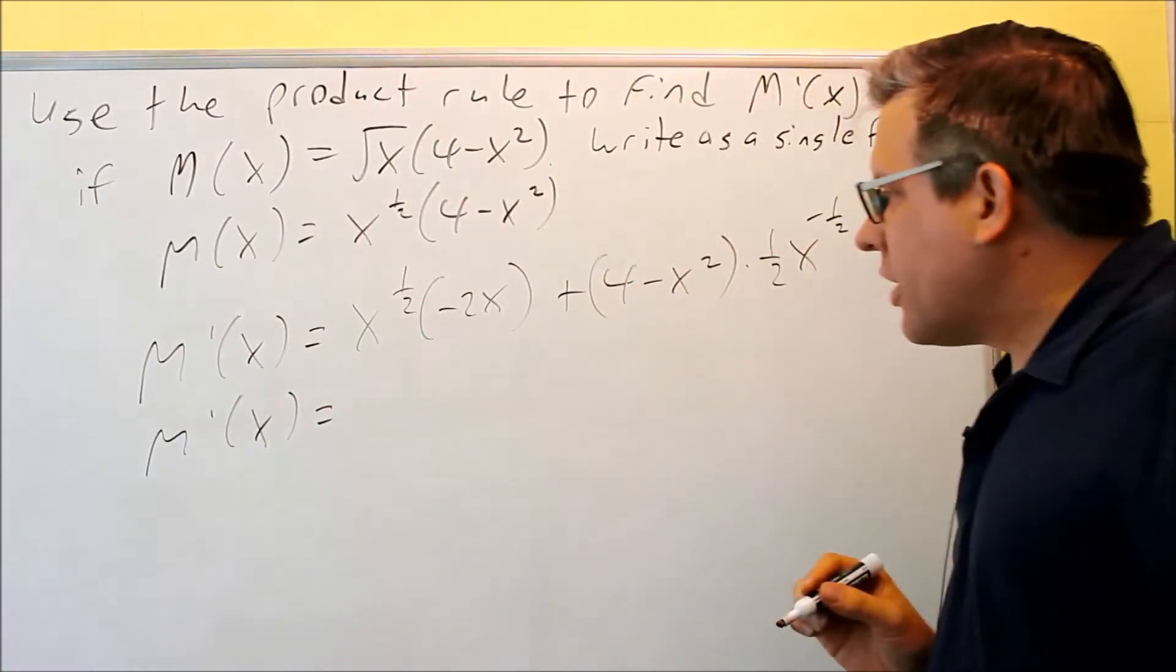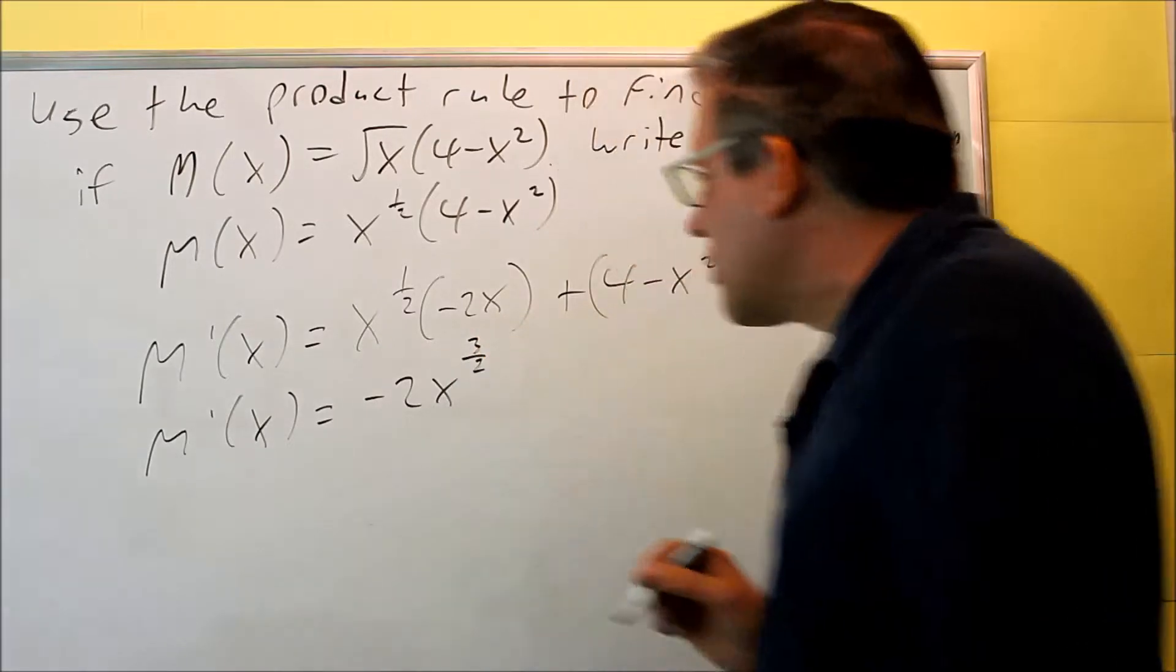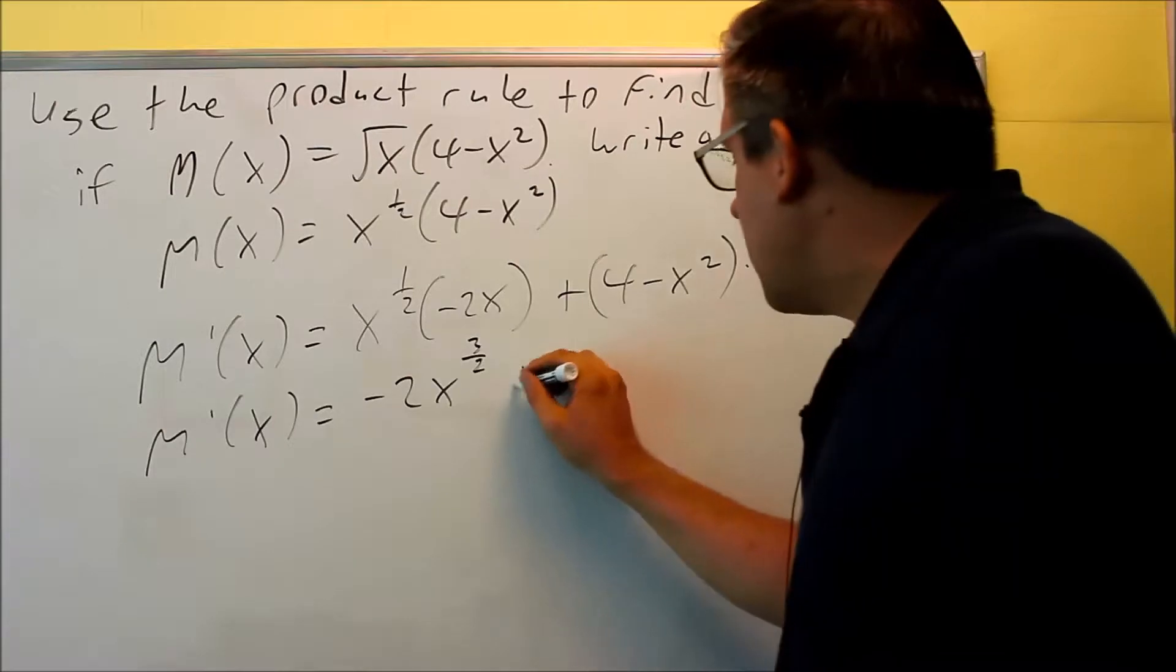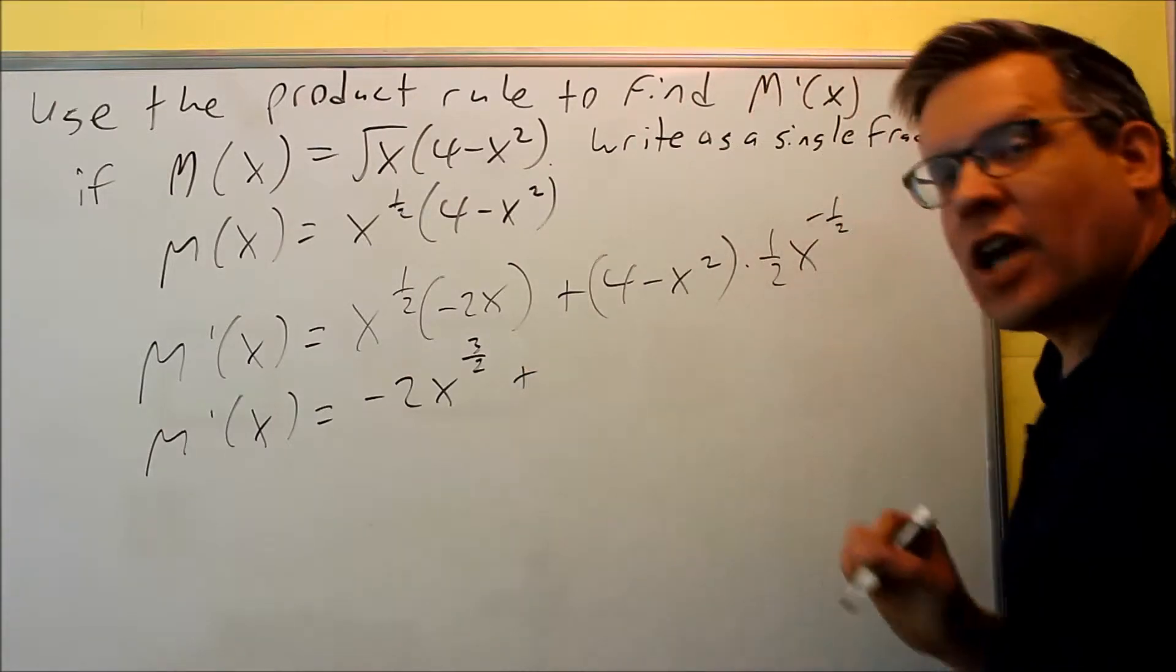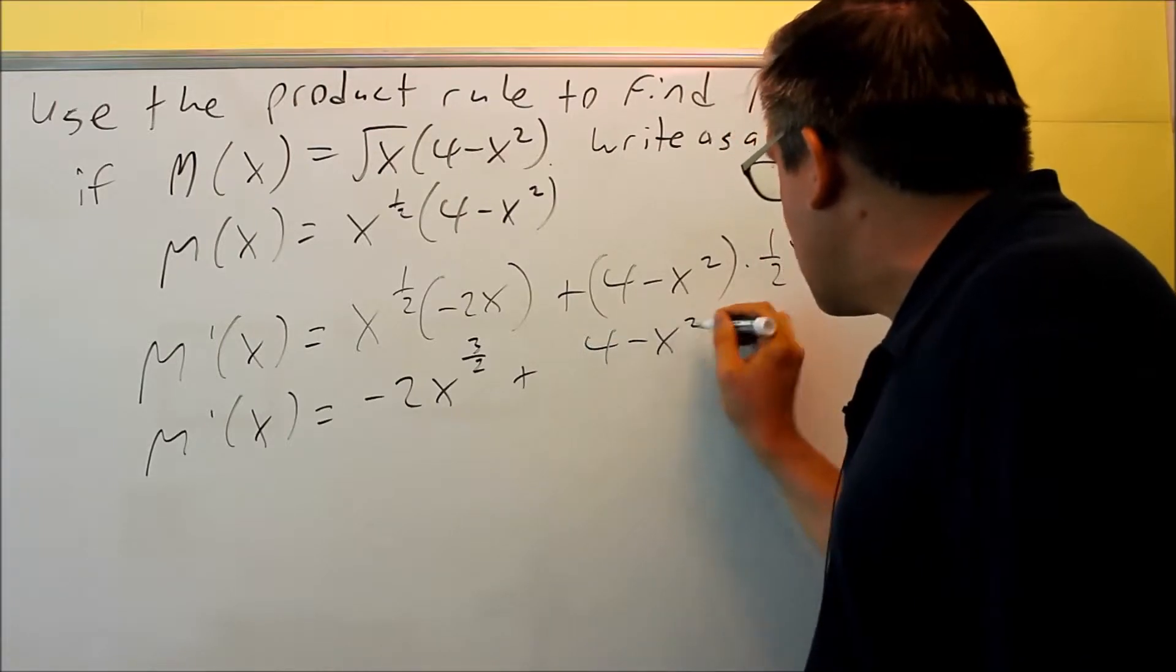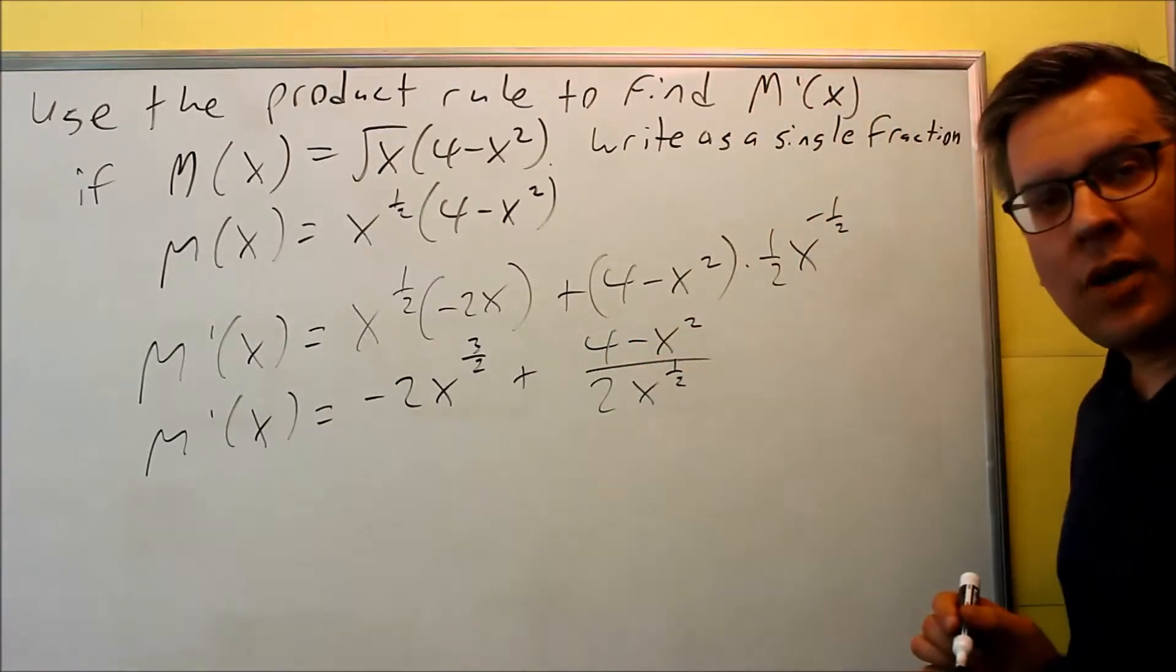Okay, when we multiply that together, we're going to get negative two x to the three-halves, because we're adding exponents when we multiply those. This one, I'm going to go ahead and turn that into a fraction because I have a negative exponent, and for this I get four minus x squared over two x to the one-half on the bottom.